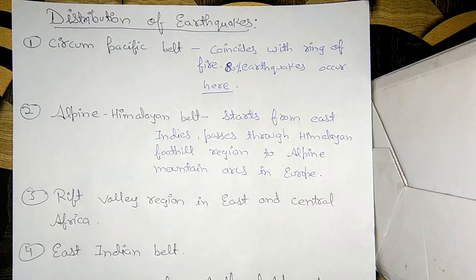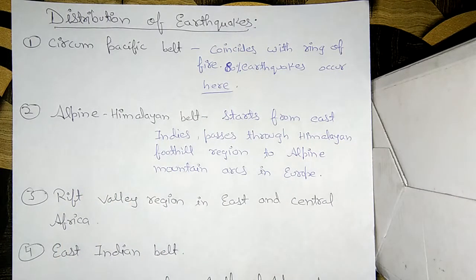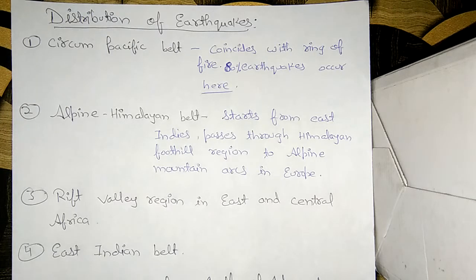Hello friends, in this video we are going to discuss the distribution of earthquakes — in which places and in which belts earthquakes occur. There are various belts where earthquakes occur. There are a list of places, and when counted together they are called a belt because many places lie within a belt.